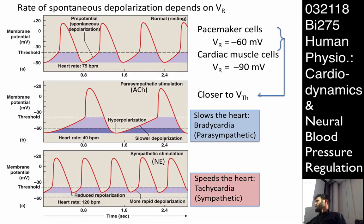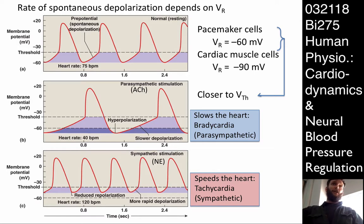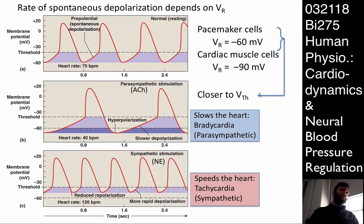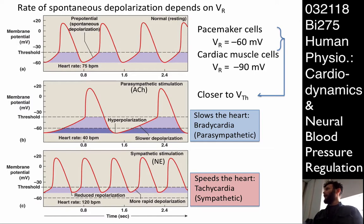Excitatory for sympathetic, inhibitory for parasympathetic nervous system on these pacemaker cells. Speeding the heart is called tachycardia. It's like the tachometer in a car with a manual transmission showing RPM — same root word, meaning speed. Tachycardia is simply a speeding of the heart rate.